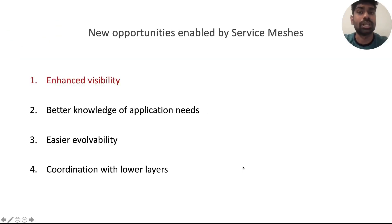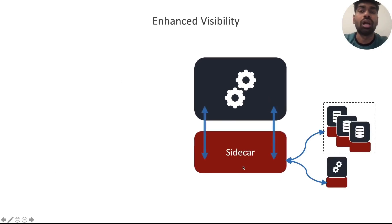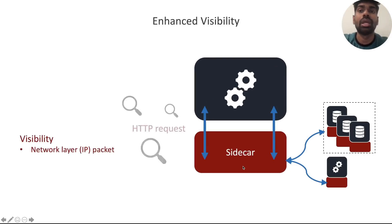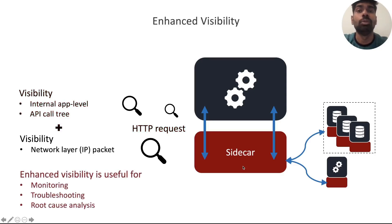When viewing the service mesh as a distinct layer in the stack, several opportunities naturally present themselves. The first is to do with the enhanced visibility that they offer. To illustrate, let me zoom into one application-sidecar pair. So far, our visibility and reach as networking researchers has been restricted to the network-layer IP packet. With the addition of service meshes, we can now look into each HTTP request that an app sends and receives. This gives us enhanced visibility and allows us to look into the internal operations of an application and have better context of the overall API call tree. This enhanced visibility can be used for monitoring, troubleshooting, and root cause analysis.